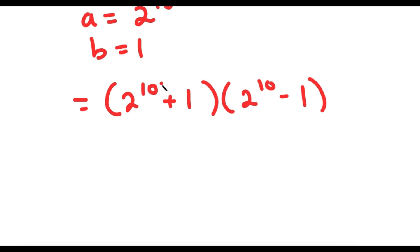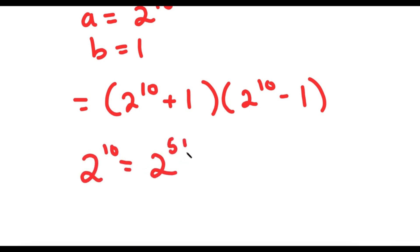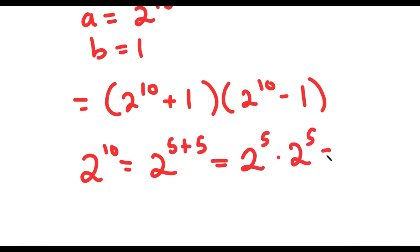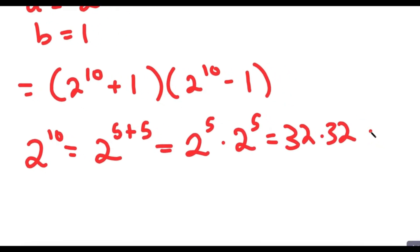Now, 2 to the power of 10 is equal to 2 to the power of 5 plus 5, which is equal to 2 to the power of 5 times 2 to the power of 5, which is equal to 32 times 32, and 32 times 32 is 1,024.